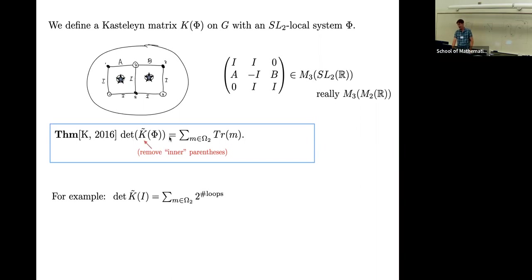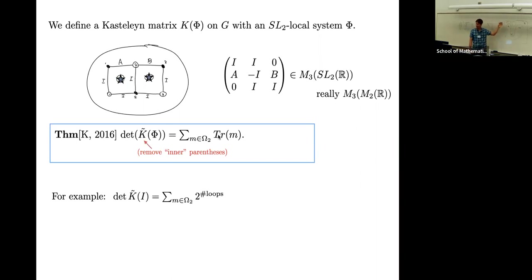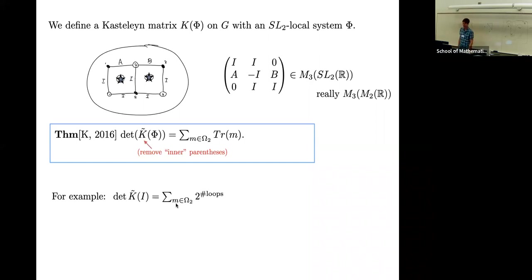The magic thing is that determinant counts double dimer covers where each configuration contributes with the product of the traces of its loops. When I take a random double dimer configuration, I get a bunch of loops and each loop will have a monodromy. If it's a trivial loop that doesn't surround any punctures, it contributes the trace of the identity matrix — two. But if it goes around some punctures, it contributes the trace of its monodromy; with multiple loops, it's the product of the traces.